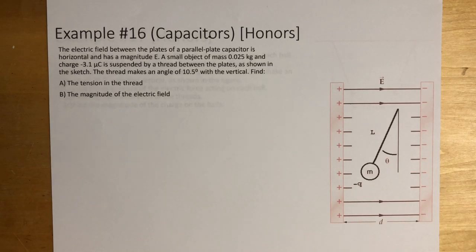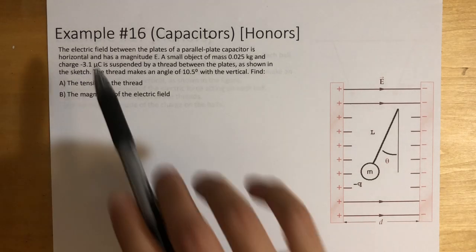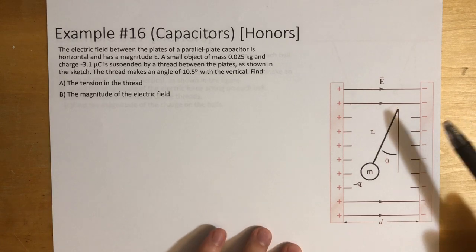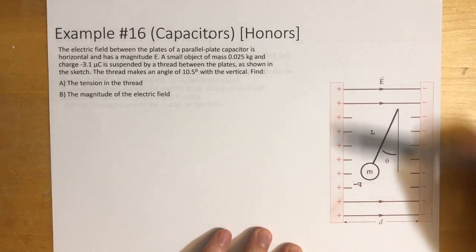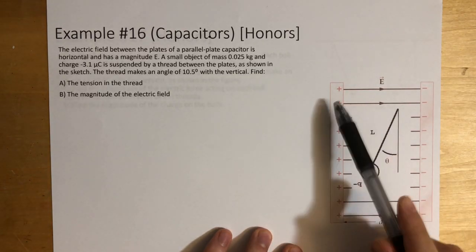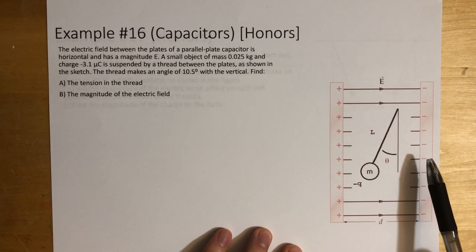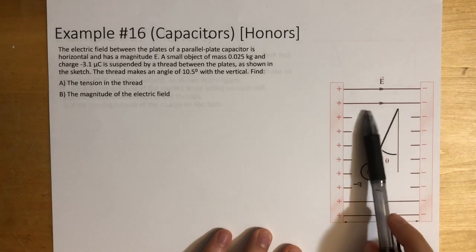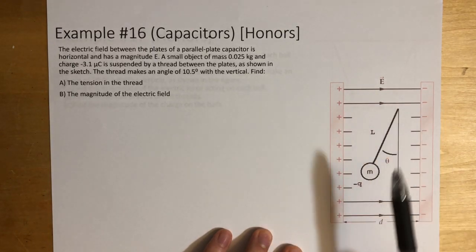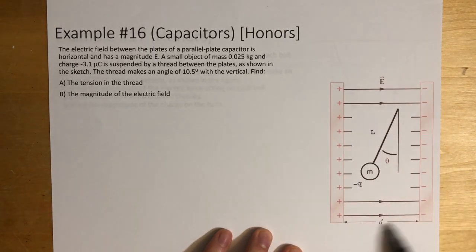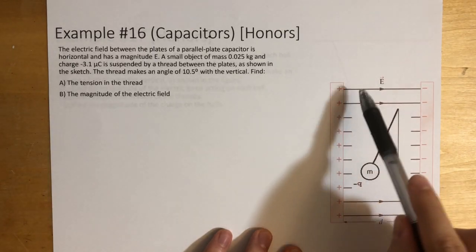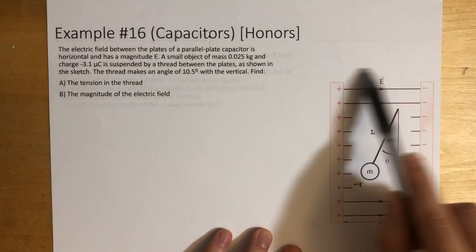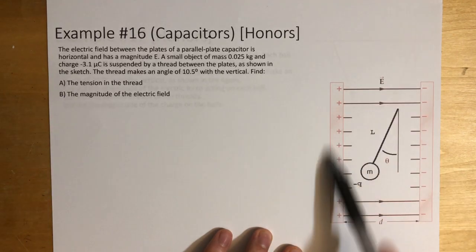Hi everyone, let's look at this problem with capacitors — Example number 16. The electric field between the plates of a parallel capacitor is horizontal and has a magnitude of E. A good thing to know about capacitors is that the electric field within it, no matter where it is, is the same throughout the whole capacitor.